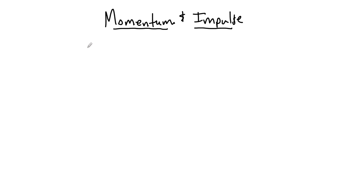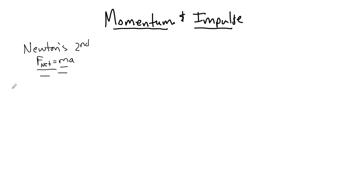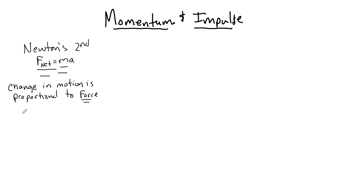First, a little bit of background. We remember that Newton's Second Law says F net equals ma. But to be honest, this is not how it was originally written. Just like Newton's First and Third Laws, Newton's Second Law was originally written in words. What he said is the change in motion is proportional to the force applied to an object. Essentially, he said you can only change motion by adding a force to an object, and he called motion a mass times its velocity.